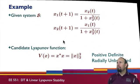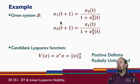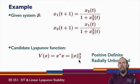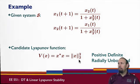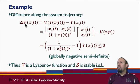So by way of example, here's a nonlinear system. It's a discrete time system. We have this candidate Lyapunov function, which is the norm of X squared, and we can see that it is positive definite and radially unbounded. We take the difference along the system trajectory. So V of F of X of T minus V of X of T.